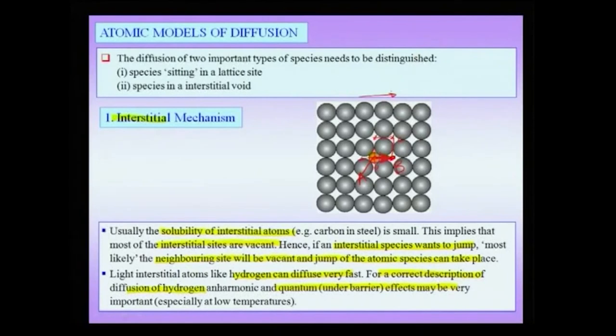When talking about diffusion of a substitutional atom, the concentration of substitutional atoms could be very large. For instance in an A-B system there could be 50% of A and 50% of B, or in an A-B-C system one third of each, forming a solid solution. This implies that the diffusing species may be present at very high concentration.